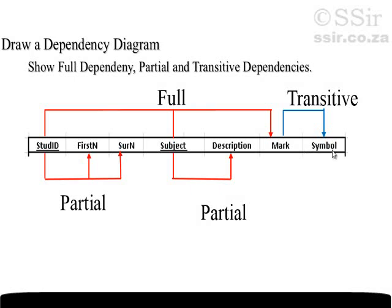Symbol is merely dependent on mark — whatever mark is, that determines symbol — not the primary key at all, not even any part of the primary key. A transitive dependency refers to a field that is dependent on a non-primary key field. Mark is not a primary key, and symbol is dependent on it, so this is a transitive dependency.